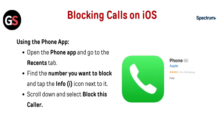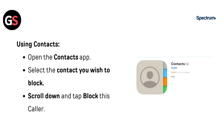Now let's see blocking calls on iOS. Using the Phone app, open the Phone app and go to the Recents tab. Find the number you want to block and tap the information icon next to it, then scroll down and select Block This Caller. Using Contacts, open the Contacts app, select the contact you wish to block, scroll down, and tap Block This Caller.